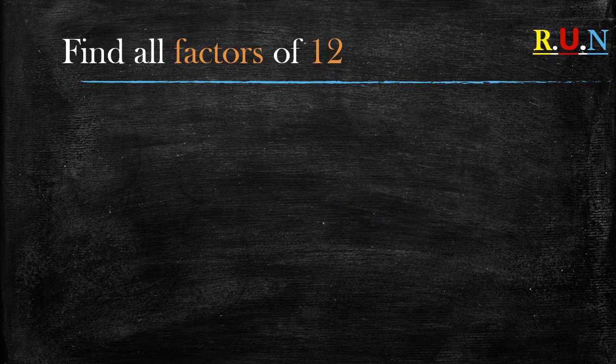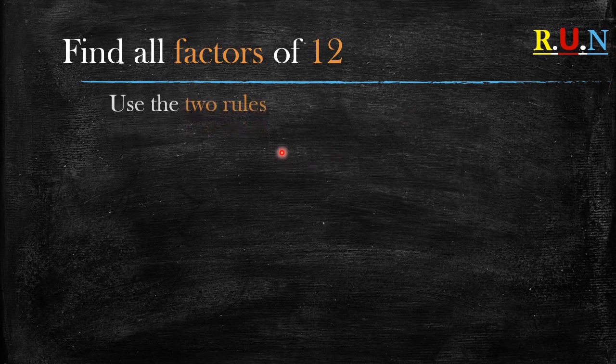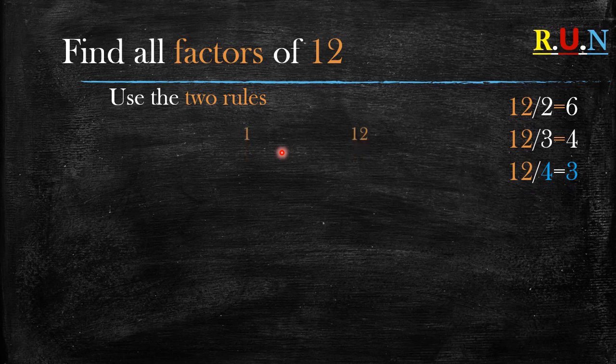So in this video we're going to be looking at quadratic trinomials. First of all, before we get into quadratic trinomials or examples, I would like us to look at two things. The first one is finding factors of a number, for example 12. So let's have a look at how to find factors of a number.